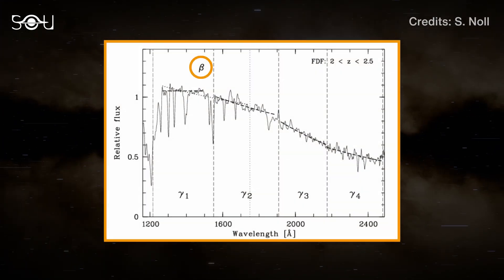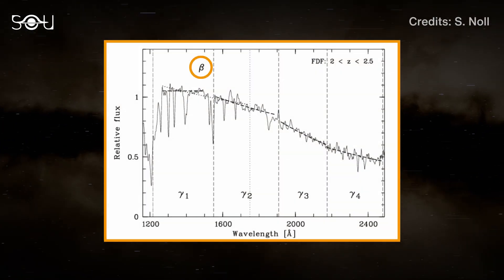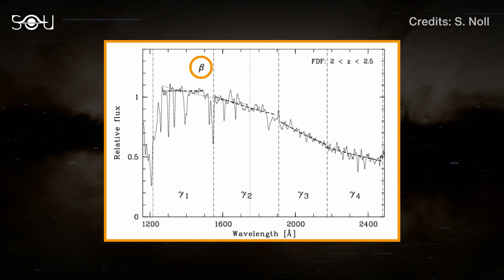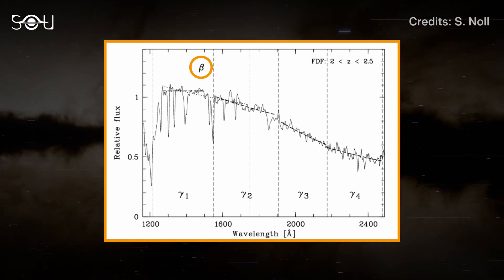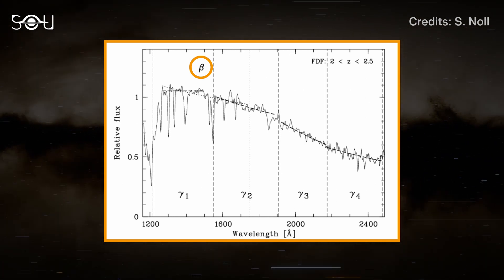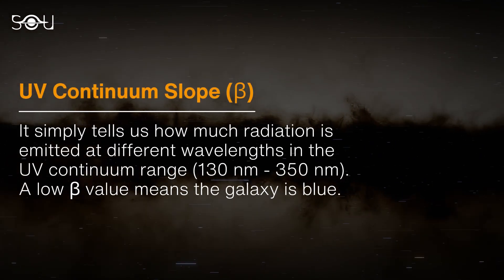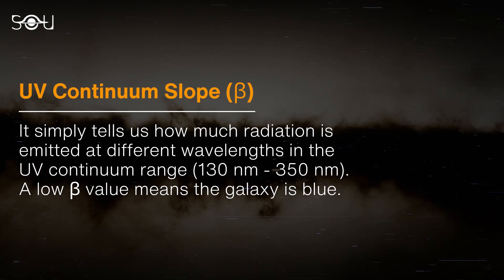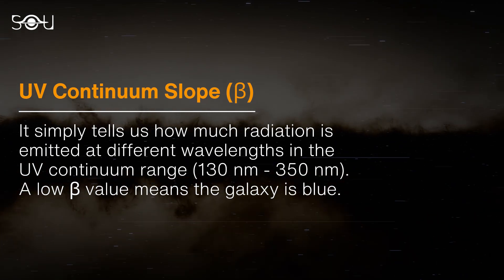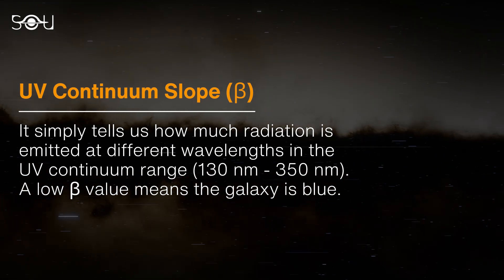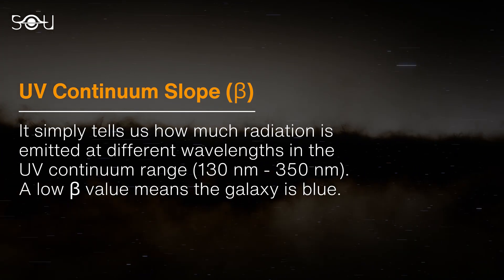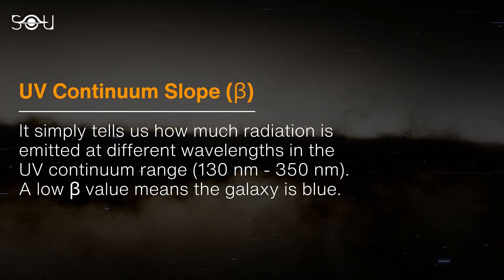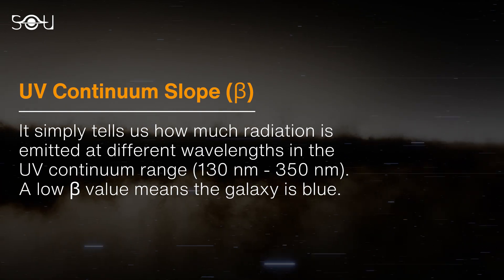The UV continuum slope beta specifies how the flux density of a galaxy varies with the wavelength in the UV continuum. Simply put, it tells us how much radiation is being emitted at different wavelengths of the ultraviolet continuum, or the wavelength range between 130 nanometers to 350 nanometers. The lower the value of this slope, the bluer the galaxy.